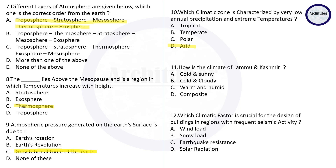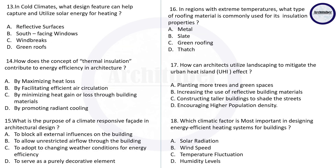Question eleven: how is the climate of Jammu and Kashmir? The climate of Jammu and Kashmir is cold and cloudy, whereas Ladakh and Mount Abu are cold and sunny. Question twelve: which climatic factor is crucial for the design of buildings in regions with frequent seismic activities? The answer is earthquake resistance. Question thirteen: in cold climates, what design feature can help capture and utilize solar energy for heating? The correct answer is south-facing windows.